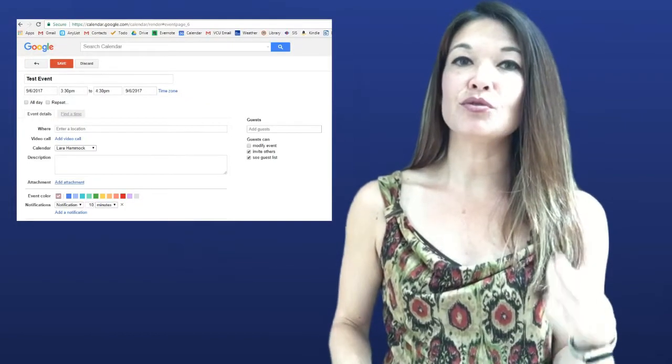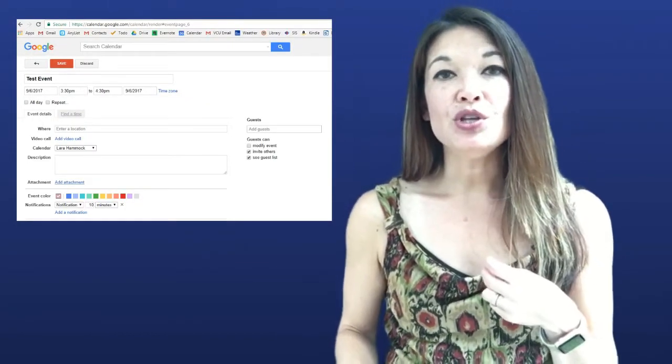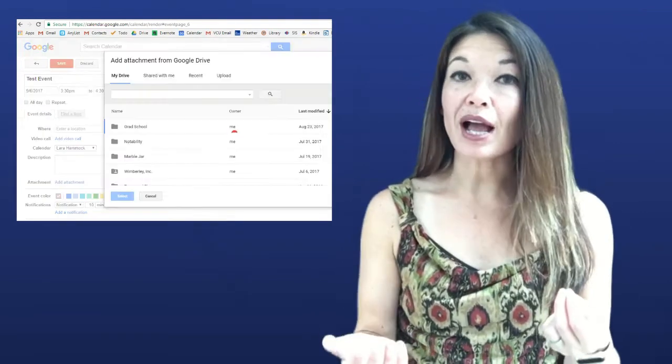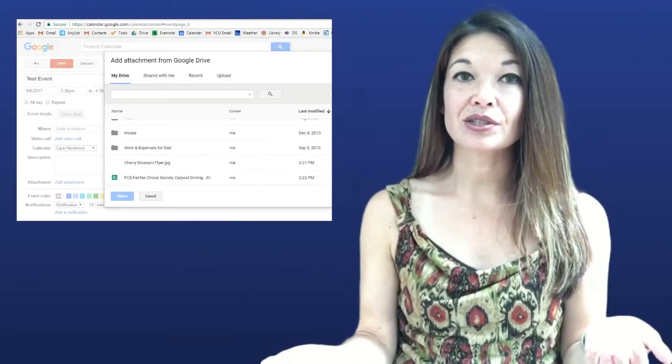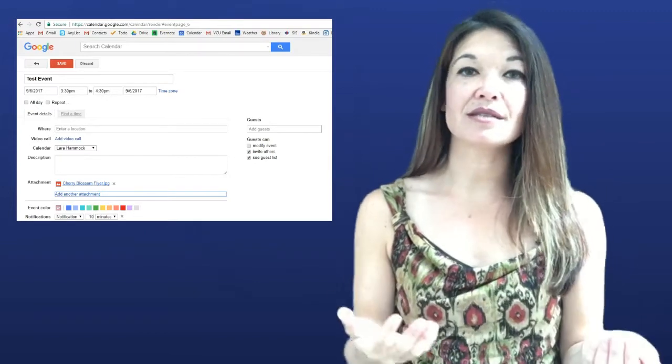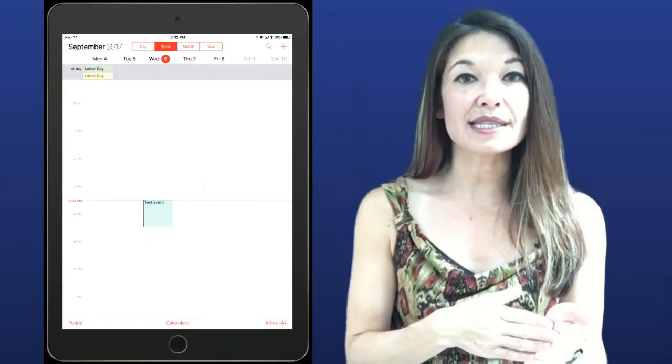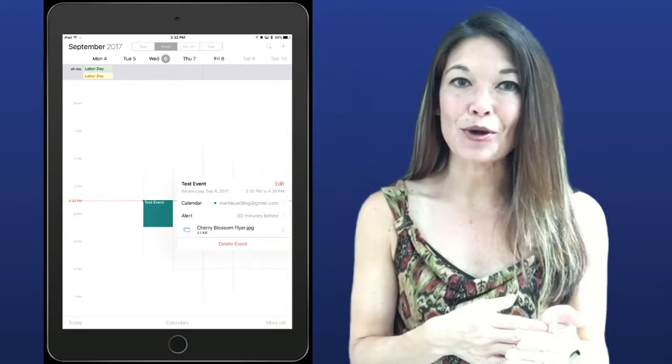If you are accessing Google Calendar from a computer browser you can attach a document from Google Drive like this, and then when you open up that event on your mobile device you can see it but you can't actually open it - it's frustrating. Plus there's no other way to attach files directly from the iPhone calendar app.